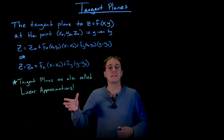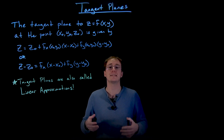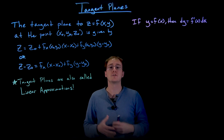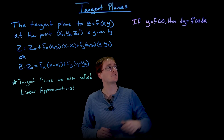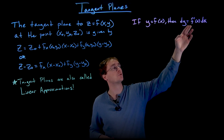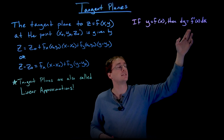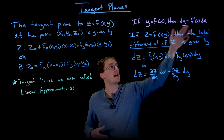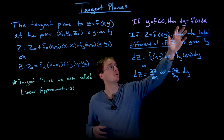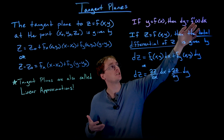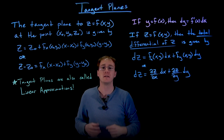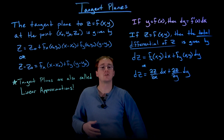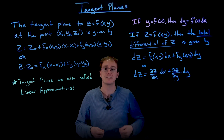Another concept related to tangent lines and linear approximations in single-variable calculus is the idea of a differential, and we have an extension of that idea for multivariable functions as well. For single-variable functions, if we have y equal to some function of x, we can express the differential of y as the derivative f prime times dx. The differential dy = f prime · dx captures the idea that the change in y equals the rate of change of the function times a small step size in the x direction.